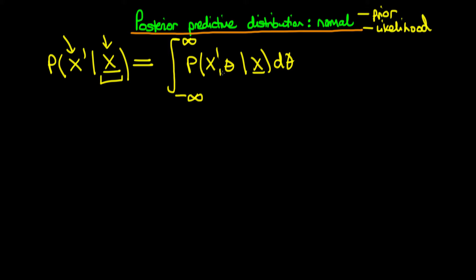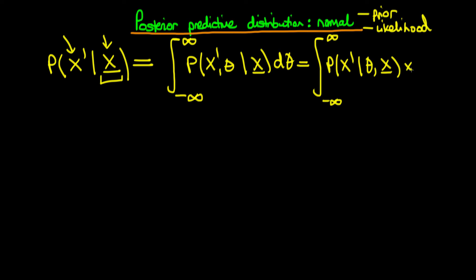All I've done to get this is integrate out choice of theta, which gives me this marginal density on the left. And we know we can decompose this into two individual probabilities using the law of conditional probability, which says this is equivalent to the probability of x-primed given theta and given our vector observations x, times our probability of theta given our vector observations x, integrated over choice of theta.